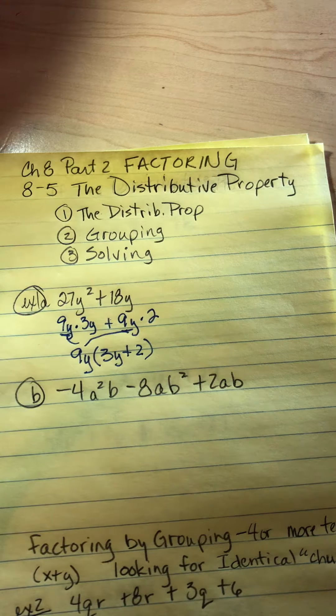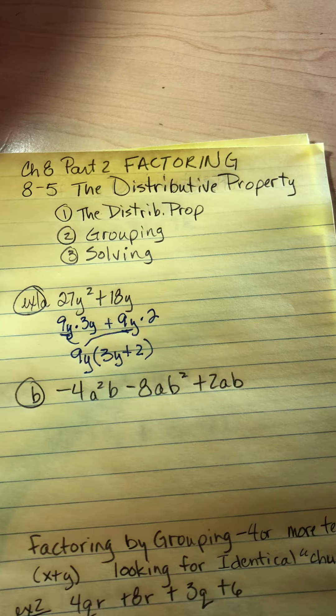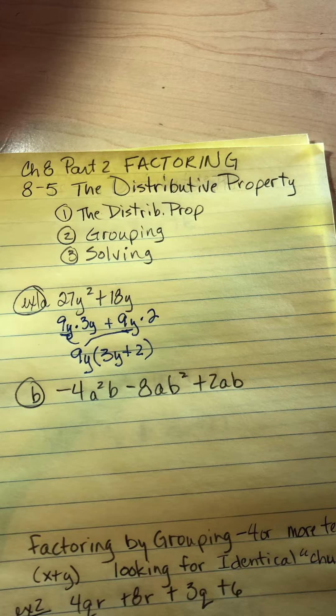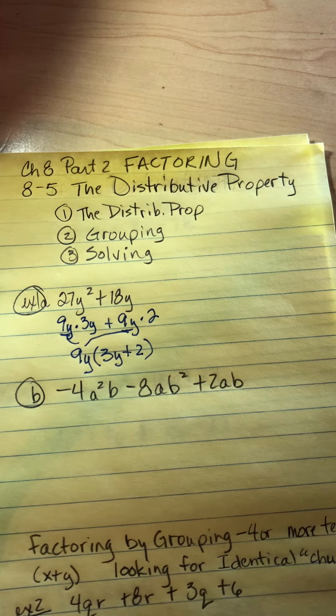So we're just dividing out that common factor. Whereas in the earlier part of the chapter, we were distributing through to get rid of parentheses. Now we want that chunk back.